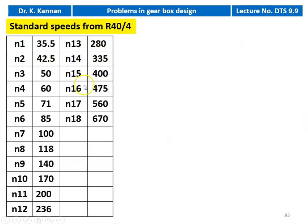All 18 speeds are: N1 through N18 — 35.5, 42.5, 50, 60, 71, 85, 100, 118, 140, 170, 200, 236, 280, 335, 400, 475, 560, and 670 RPM.